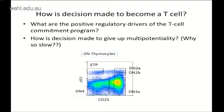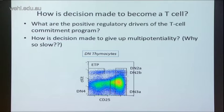These are the dramatis personae of our system — double negative thymocytes stained for kit and CD25. These are the markers we're talking about. This is the first stage, second, third, fourth. This is when TCR beta is rearranged, this is when the cells go on from there. What I'm going to be talking about is really how is T cell identity established in these early stages.